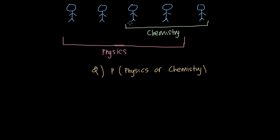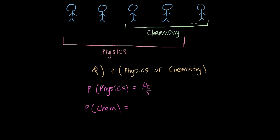When you look at this question, you might think it says physics or chemistry, so let me try by just first finding the probability of taking physics alone. The probability of physics would be equal to four people taking physics out of five people in the class, so that's four out of five. And the probability of chemistry, we have three people taking chemistry out of five people in the class, so that would be three out of five. You may think to do physics or chemistry equals four out of five plus three out of five, and that's going to give us seven out of five.